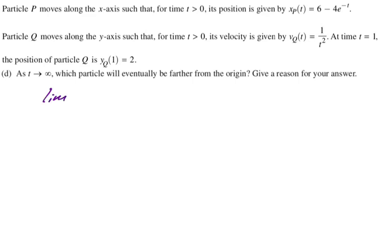So I'm going to look at first, the limit as t approaches infinity of x_P(t), which is going to be the limit as t approaches infinity of the quantity six minus four e to the negative t. But for the purpose of limits, it's better to write it as four over e to the t, because four is not growing, e to the t is growing to infinity. So we basically have six minus zero, which gives us six. Alright, so that's where x is going to be—six units from the origin.